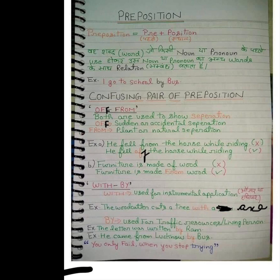What is the meaning of 'of'? 'Off' means sudden separation — an accidental separation that happens all at once. And 'from' indicates a planned or natural separation. He fell off the horse while riding. Furniture is made from wood — if it is 'of' wood, then it is 'made of.'